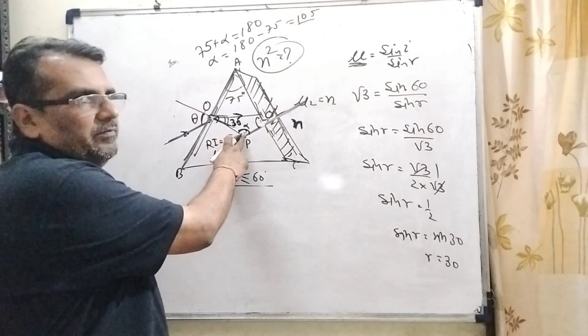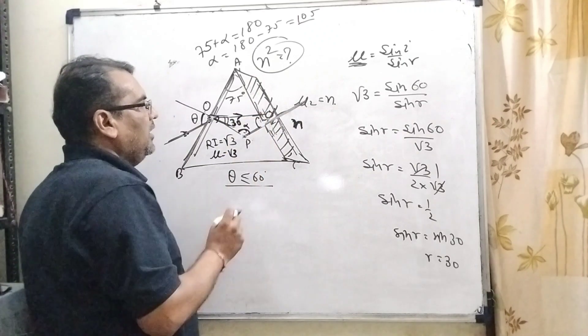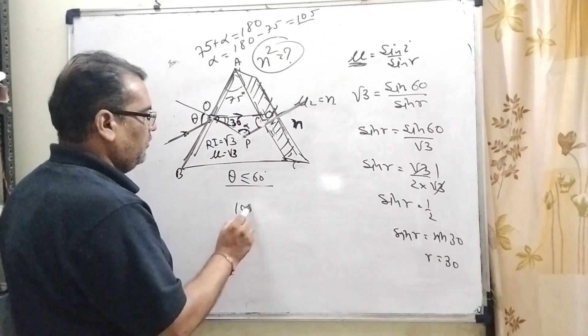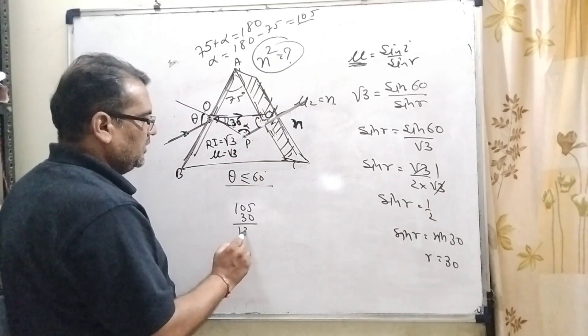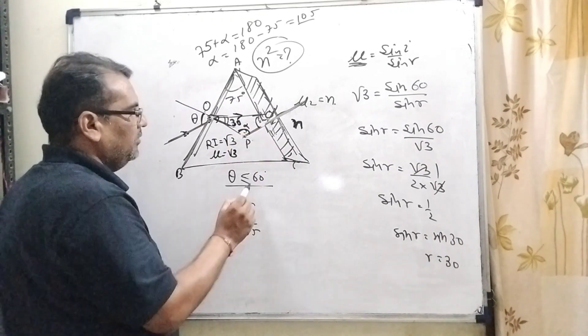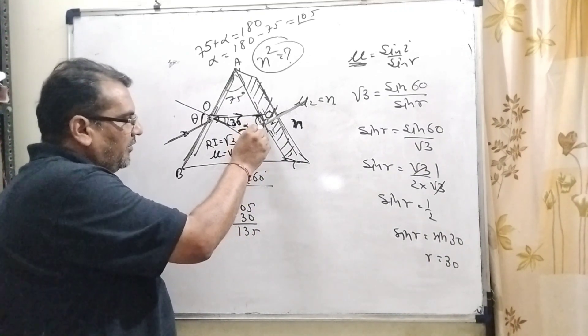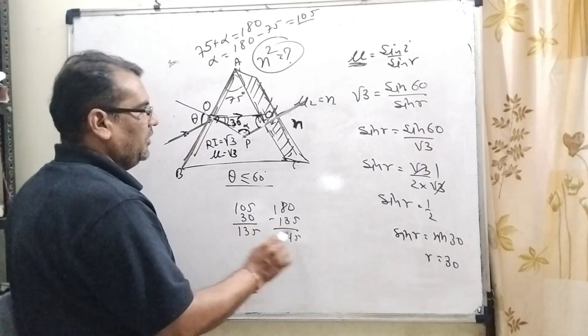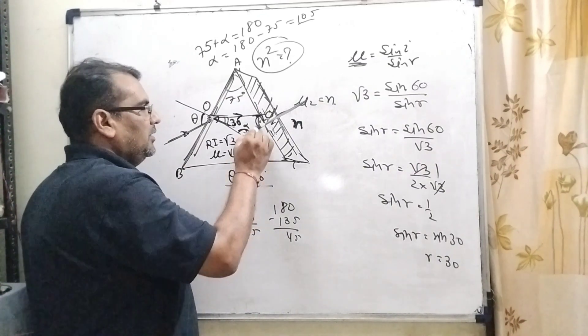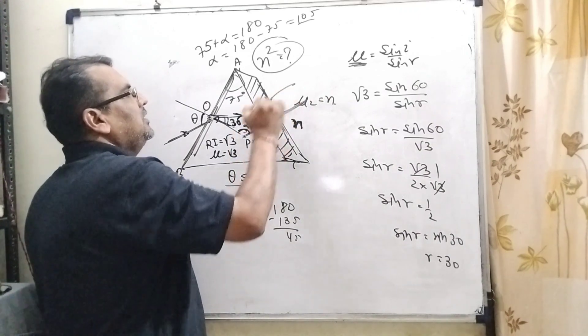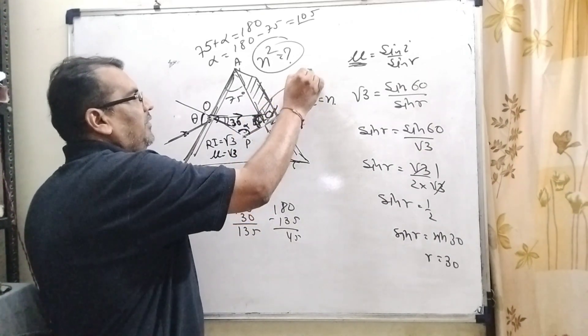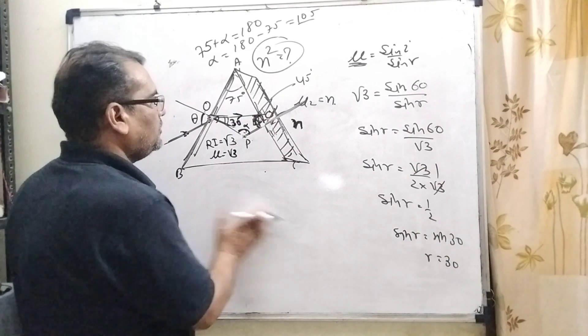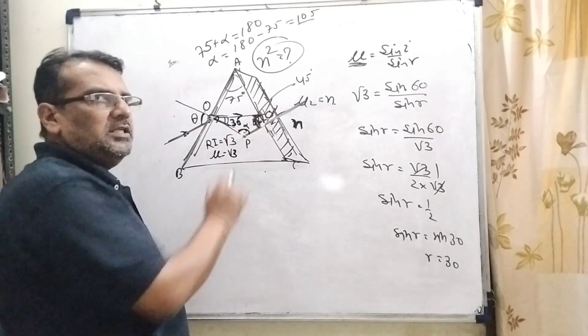So here that is 105. By applying triangle sum property, that is 105 plus 30, that is 135. And this angle means angle of incidence at second surface. That is 180 minus 135, that is 45. So here this angle is 45 degrees.